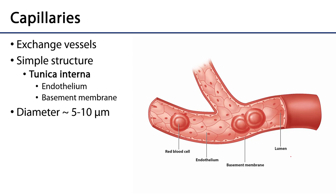Capillaries are categorized as exchange vessels because they are very permeable, allowing movement of material in and out. In simplest terms, a capillary is just a tunica interna — endothelium supported by a basement membrane. The overall lumen has a diameter of about 5 to 10 micrometers, which is significant because the average erythrocyte is about 8 to 10 micrometers in diameter. This means erythrocytes travel through capillaries single file, promoting the ability of hemoglobin within them to exchange oxygen and other gases.